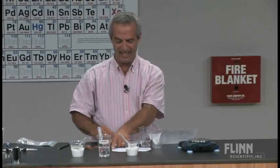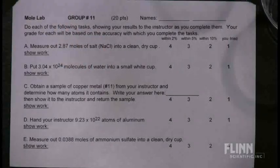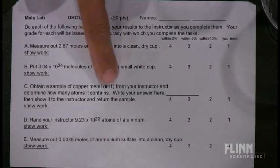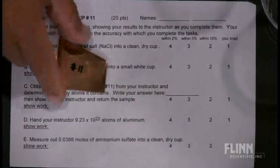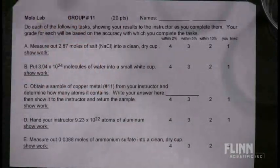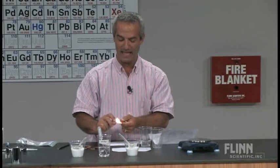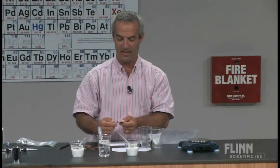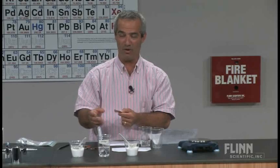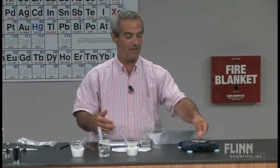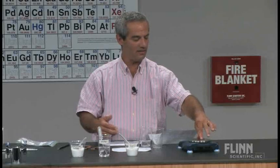Task C: obtain a sample of copper from your instructor and determine how many atoms it contains. I've got those samples here, and group 11 gets sample number 11. This is the opposite task — they just write the answer down for how many atoms are in their copper sample and bring that answer up to me. They weigh it on their scale and get the answer.